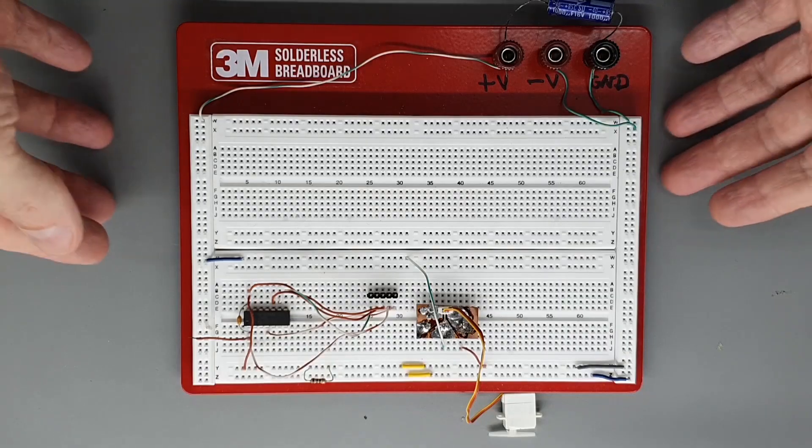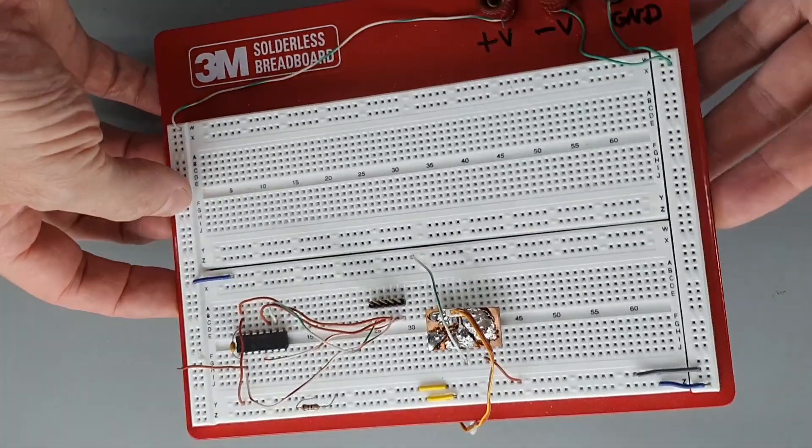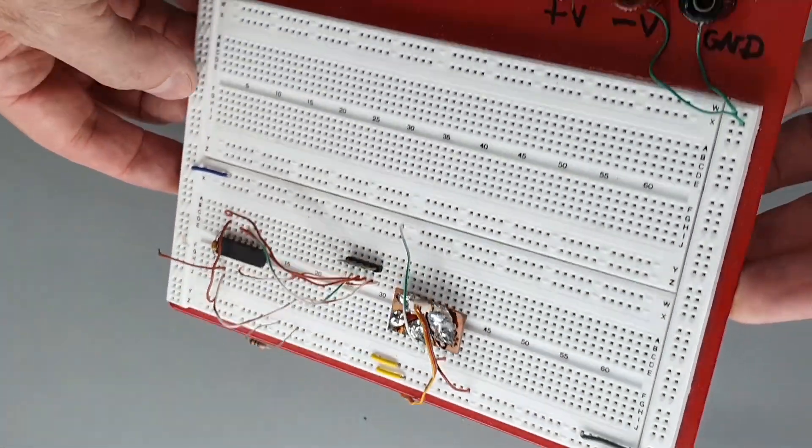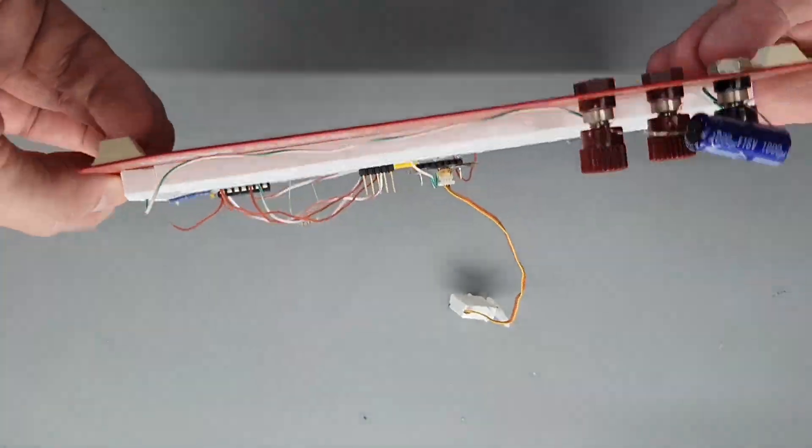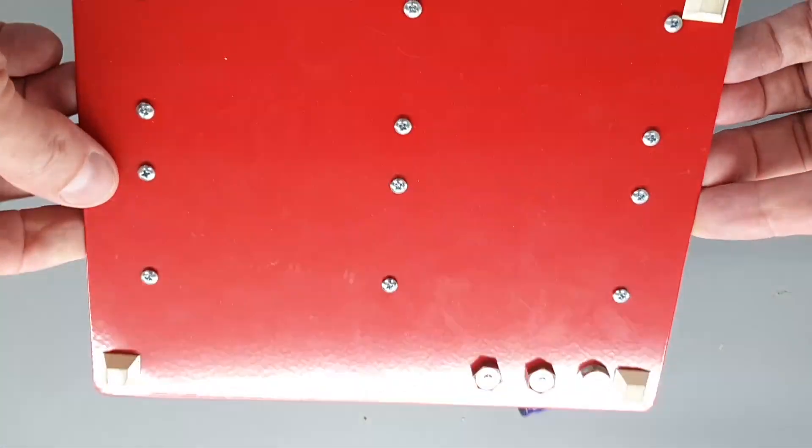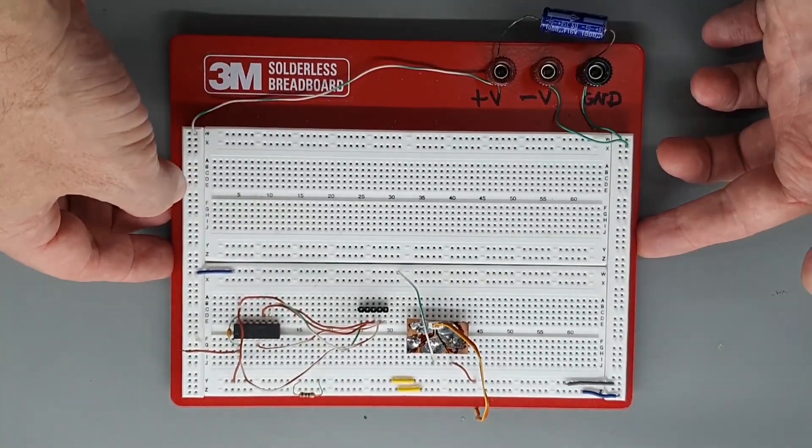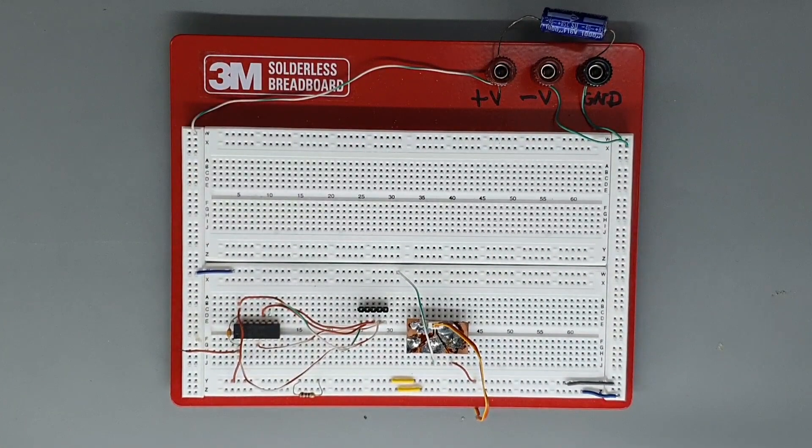I tend to avoid solderless breadboards for all but quick tests and simple circuits. They become a total fail as soon as you encounter high currents, high frequencies, or any significant complexity. When you have hundreds of connections, the low reliability of the spring contacts starts to really become problematic. You already have enough to think about. Why add nightmarish flaky connections to the mix?